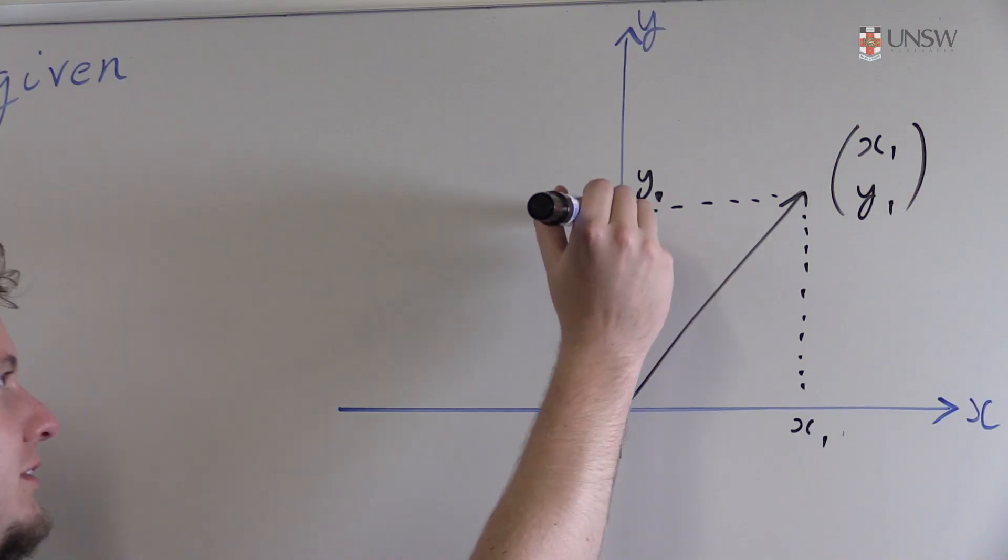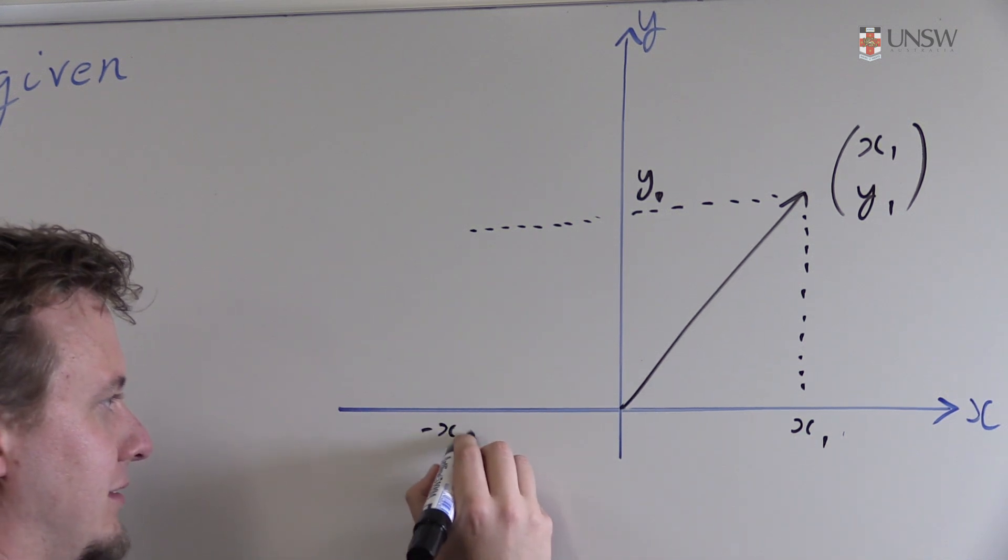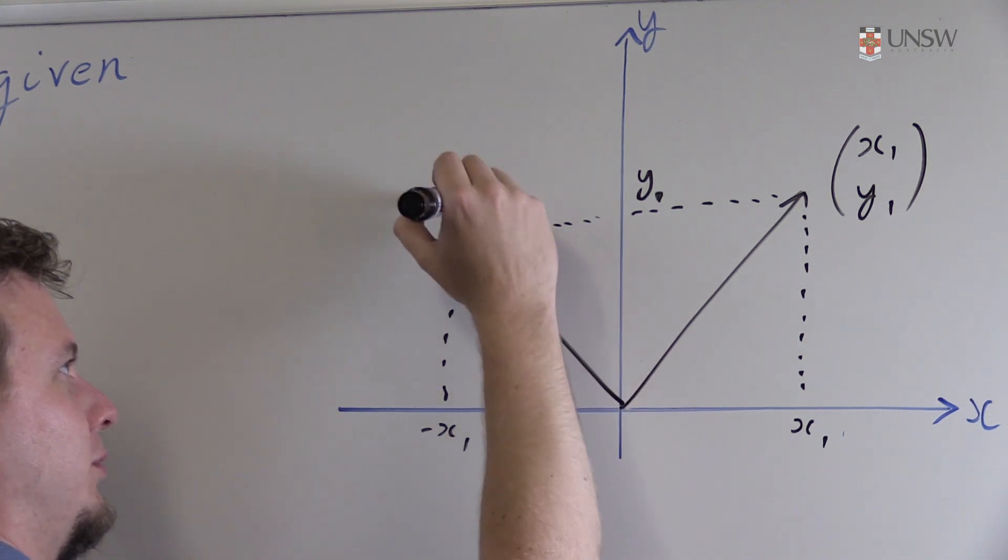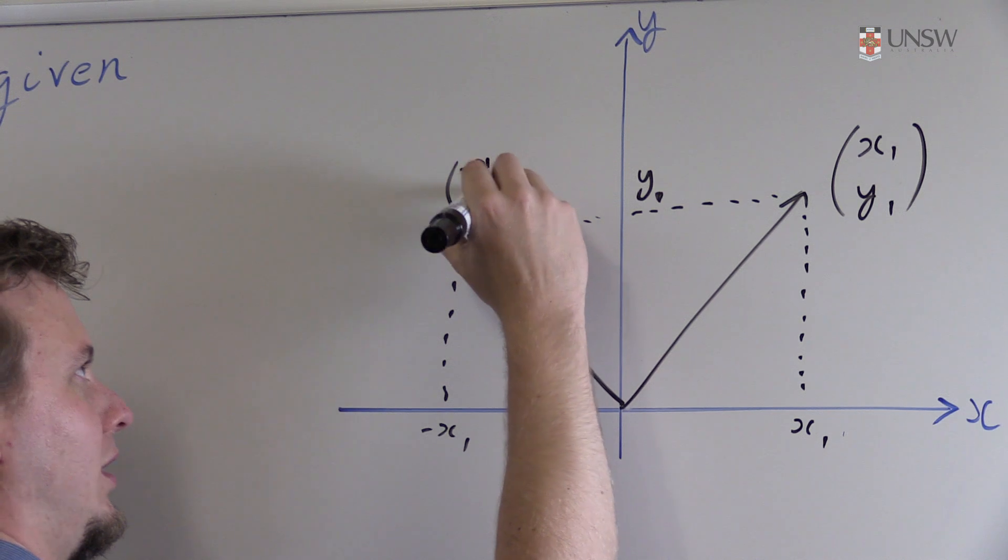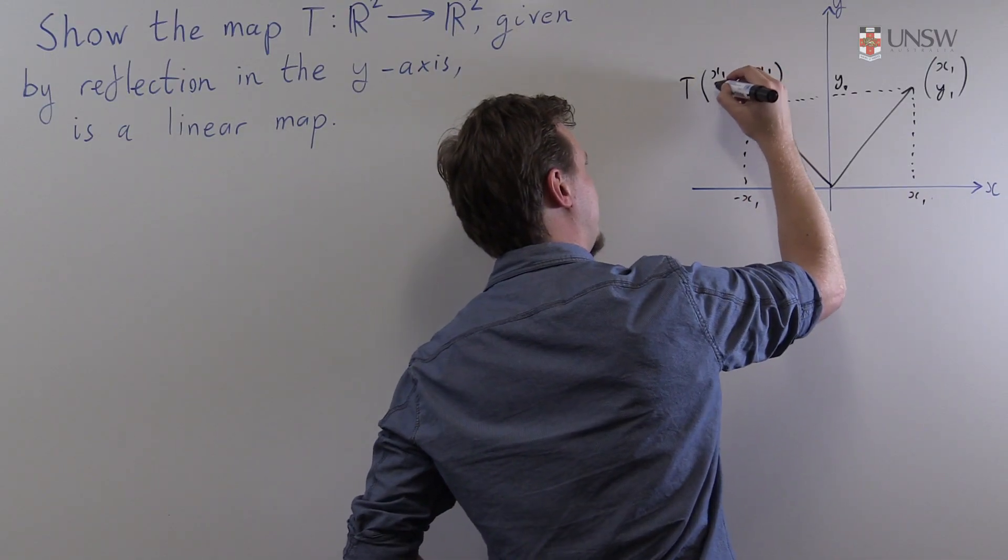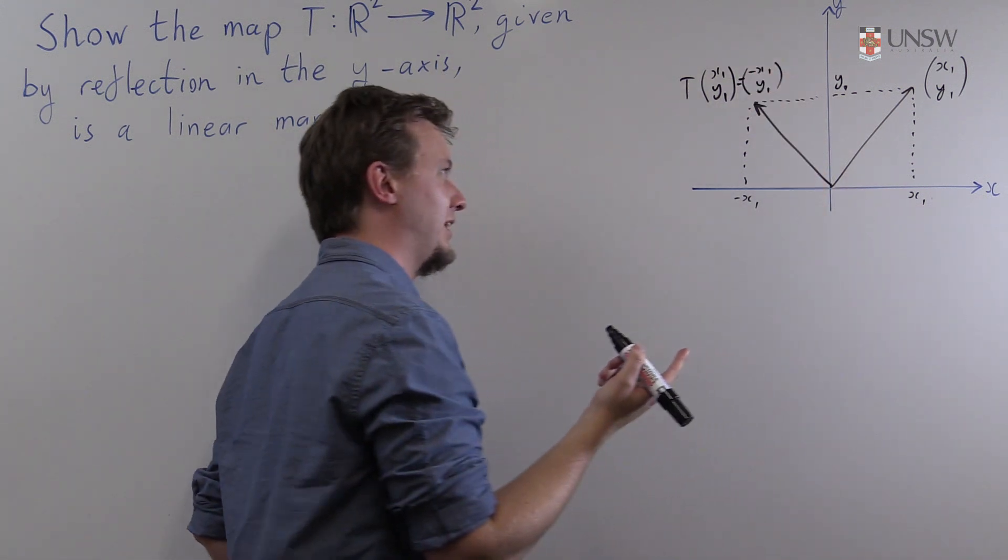Well it should have the same y component and the x component should now be minus x₁. So this gives us the point (-x₁, y₁) and this is the map acting on (x₁, y₁).